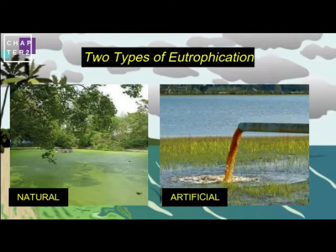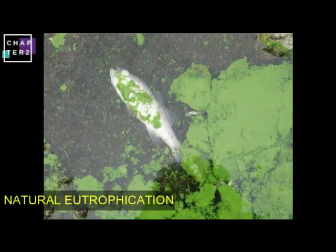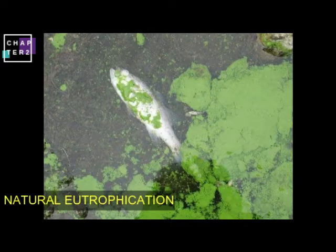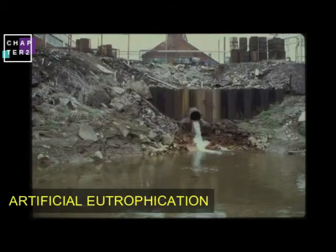There are two types of eutrophication. Natural eutrophication comes from the soil and animals. Artificial eutrophication, on the other hand, is man-made.